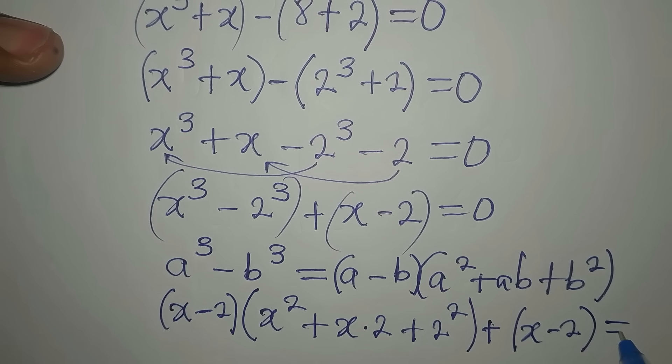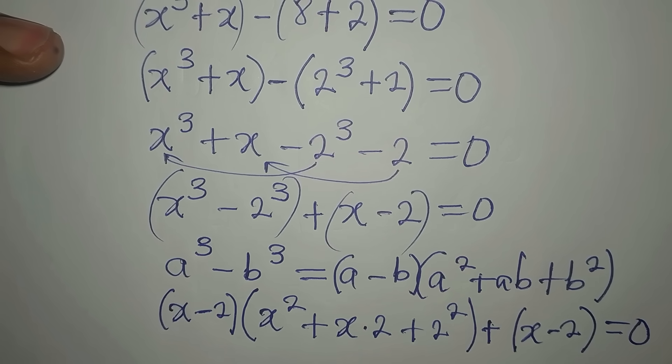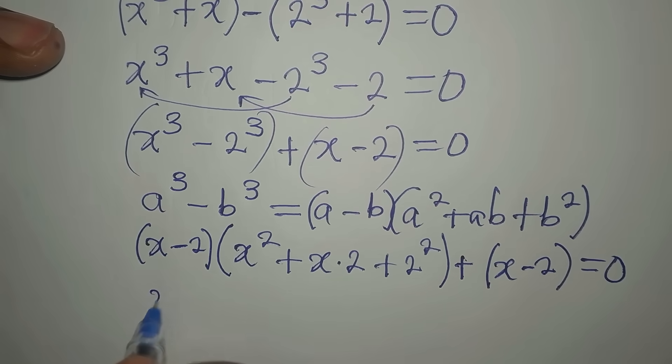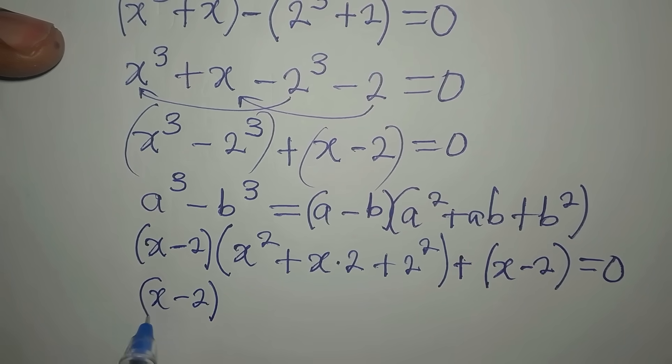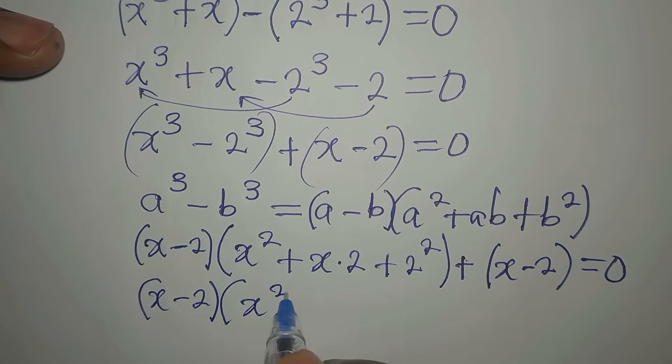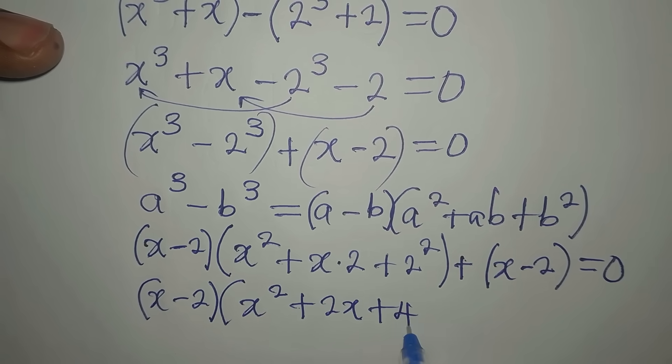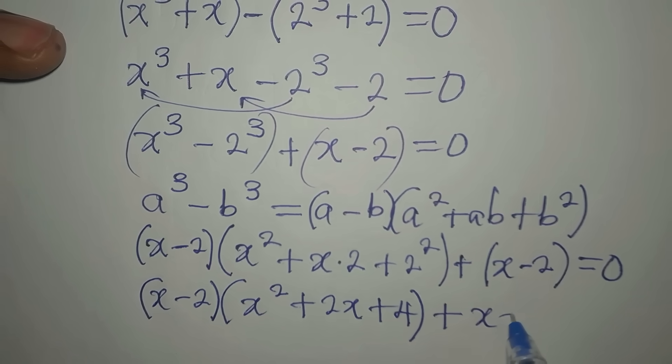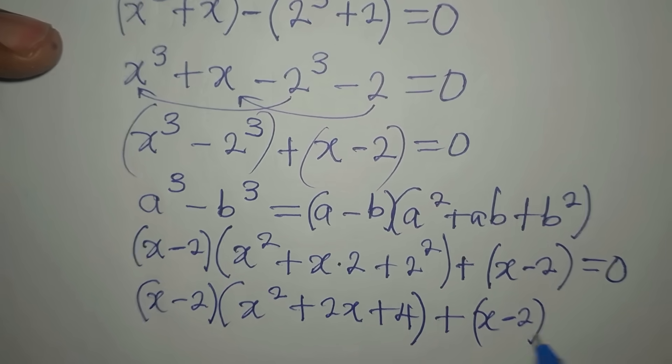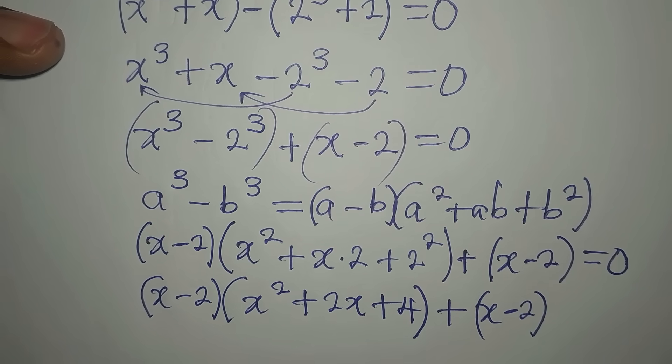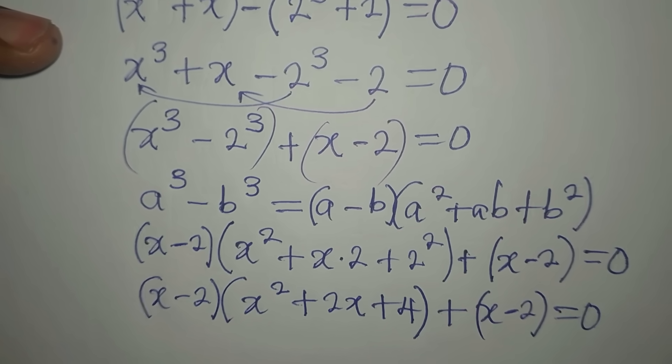If we go ahead, x minus 2 is here, x squared plus 2x plus 4 is here, and we still have x minus 2, which I almost left out. Then we equate to 0.